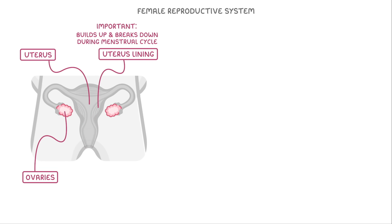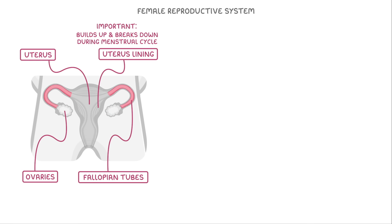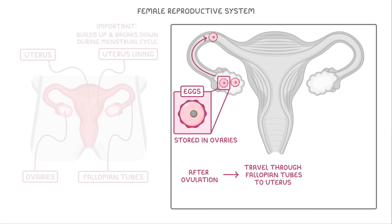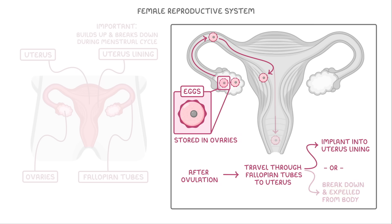Then we have the ovaries out here on the sides, which are connected to the uterus by the fallopian tubes. Eggs are stored in the ovaries, and after ovulation they travel through the fallopian tubes to the uterus, where they could either implant into the uterus lining or break down and be expelled from the body.